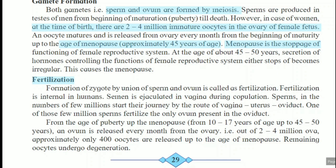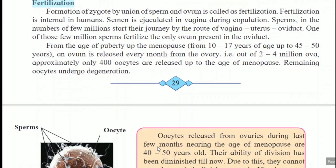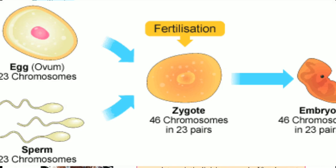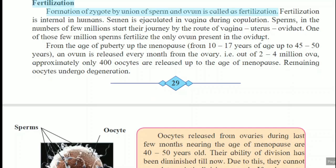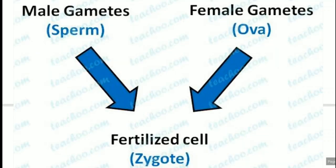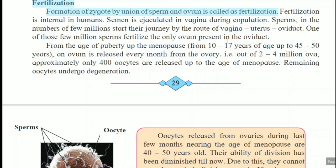The next stage is fertilization. Fertilization is the formation of a zygote by the union of sperm and ovum. Fertilization is internal in human beings. During copulation, when ejaculation of sperms occurs, millions of sperms are present. But the ovum is only single — only one. So from those millions of sperms, only one sperm gets fertilized with the ovum, and this process occurs in the oviduct.